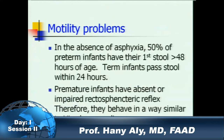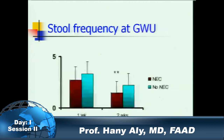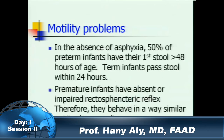In the absence of asphyxia, 50 percent of premature infants will have their first stool after 48 hours, while term infants have a stool within 24 hours. Premature infants have absent or impaired recto-sphincteric reflex and behave similarly to Hirschsprung disease. In motility-related NEC, the pathogenesis involves feeding a baby who is not stooling. Stool accumulates in the colon, causing fermentation and inflammation — like a toxic megacolon — and then the baby develops NEC.